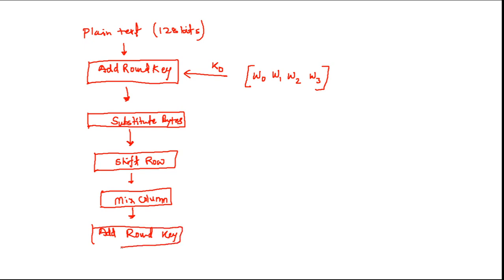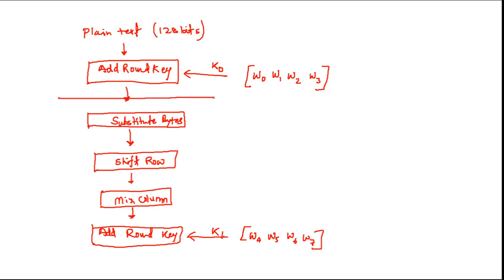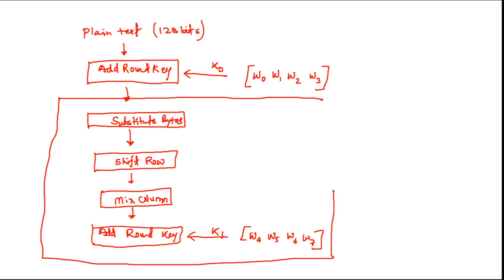These four steps together form one complete round. For the Add Round Key step in round 1, we use key K1, which uses words W4 through W7. Key zero used W0 to W3, so key one starts from W4 going up to W7. This entire process — Substitute Bytes, Shift Row, Mix Column, and Add Round Key — is called round 1.